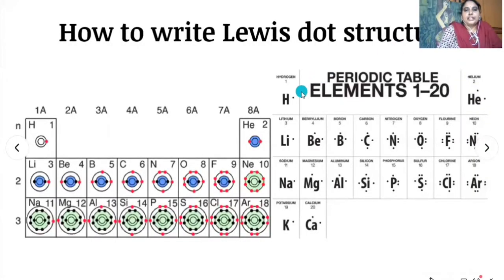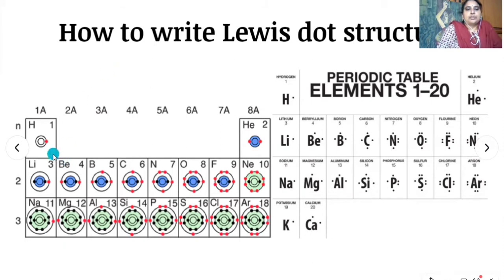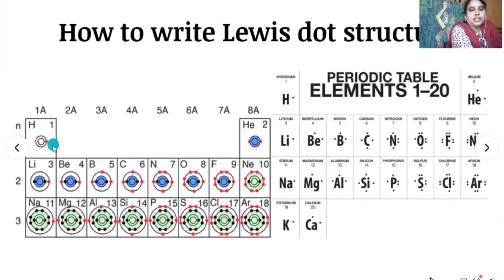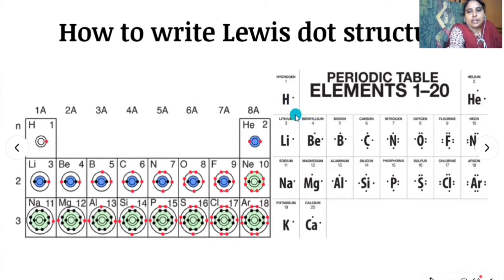How to write Lewis dot structures: the electrons present in the outermost shell are called valence electrons. For example, take hydrogen — its atomic number is one, and electronic configuration is 1s¹. The electron present in the outermost shell is only one, so we put one dot on the hydrogen atom.